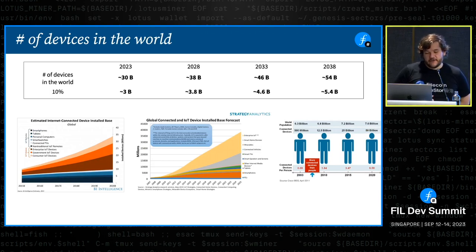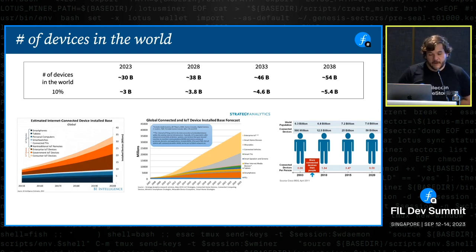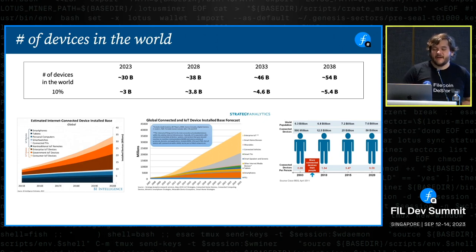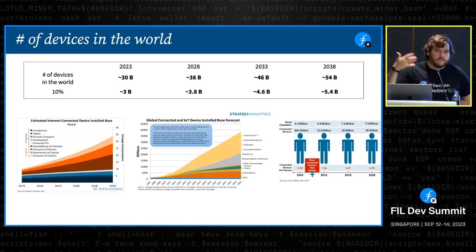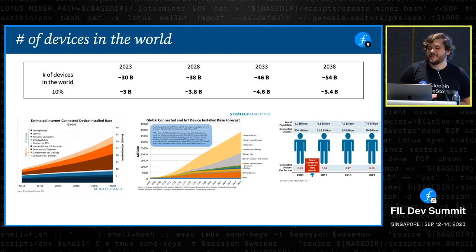The number of devices in the world is way trickier — the estimates range a lot. You can interpolate between a bunch of figures to land on about 30 billion devices in the world, which seems like a low bound. I started introducing a 10% figure at the bottom — if we want 10% of the market share of cloud storage, that means 3 billion devices need to be transacting with Filecoin today. This is growing at a pretty alarming pace, probably going to close to double by 2038. The bulk of it is IoT and enterprise IoT — that's where most of the devices are being built, think of all the computerization of all kinds of systems.